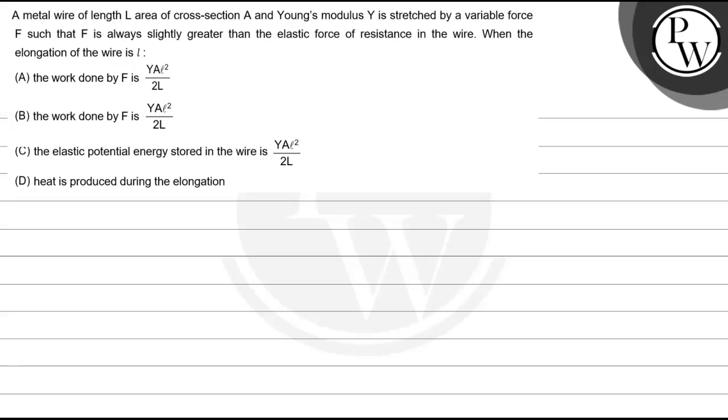Hello everyone. Let's treat the question. A metal wire of length L and cross-sectional area A with Young's modulus Y is stretched by a variable force F such that F is only slightly greater than the elastic force of resistance in the wire.